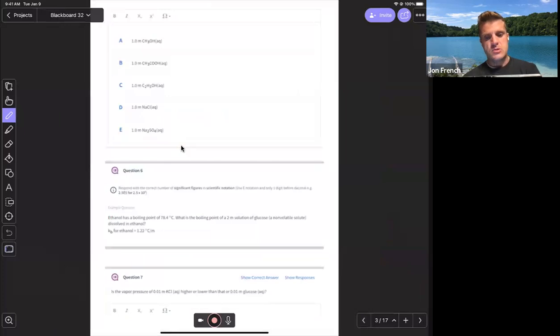Question five, I think it asks us which one of these is going to have the lowest vapor pressure. The lowest vapor pressure is going to have the highest boiling point. So to answer this, they all have the same molality. We want to know the Van Hoff factor for each of these. So the Van Hoff factor for methanol is one, acetic acid is one, ethanol is one, sodium chloride is two, and sodium sulfate ionizes to give us two sodium ions and one sulfate. It's going to have the largest Van Hoff factor.